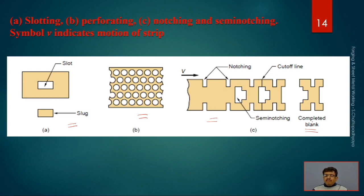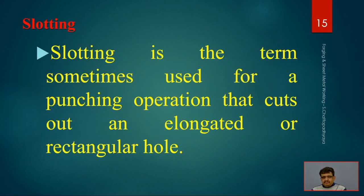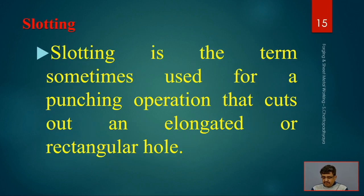The difference between punching and blanking: in case of blanking, whatever comes out from those sheets is known as the product - whatever remains there is the waste. Slotting is a term sometimes used for a punching operation that cuts out an elongated or rectangular hole, which is known as slots.